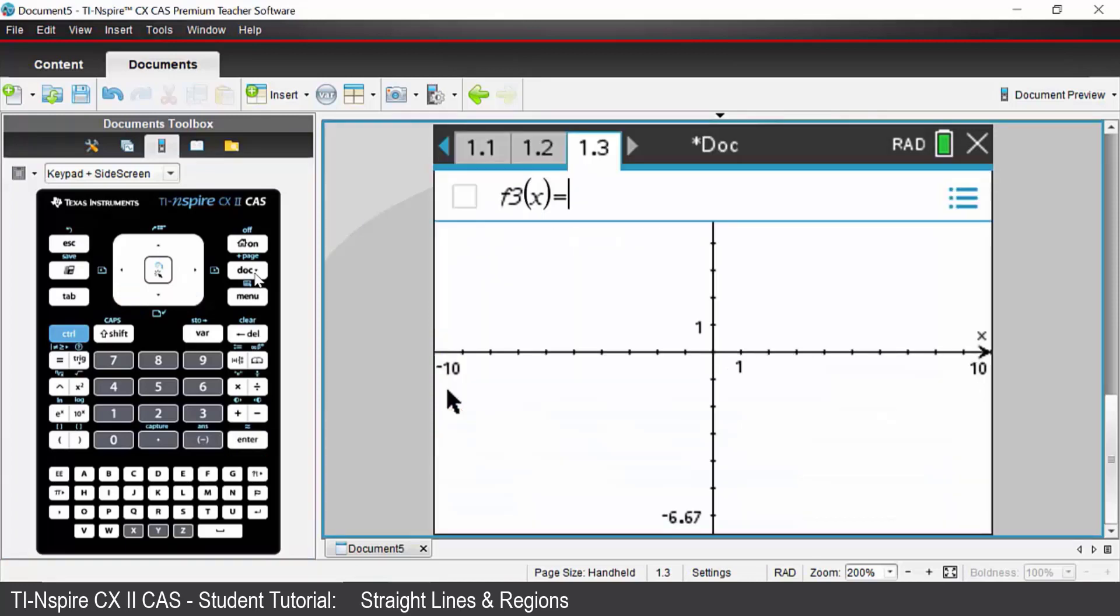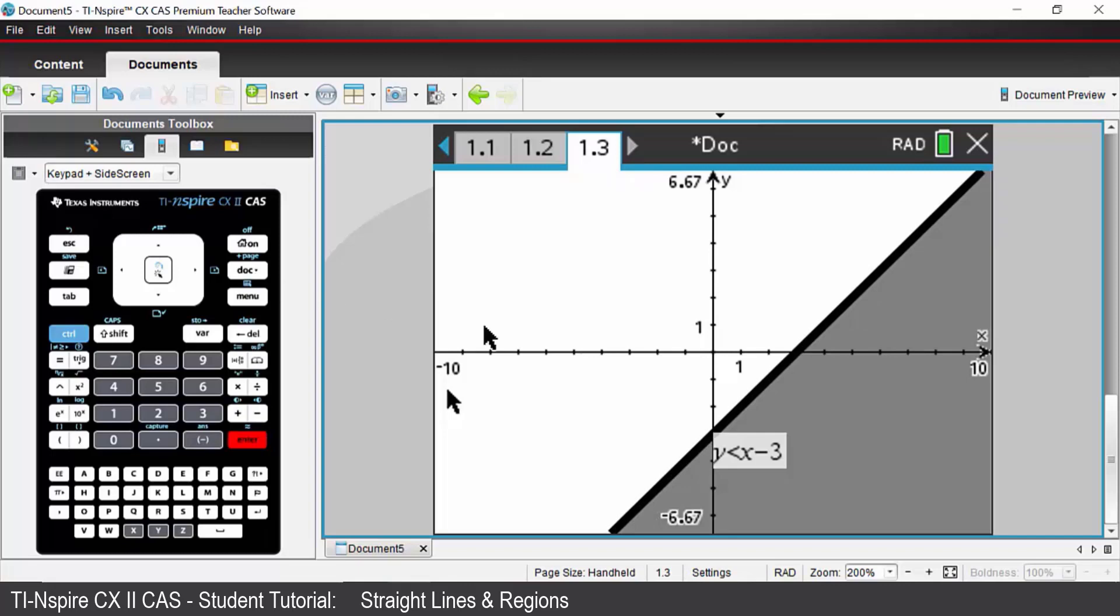Now to graph a region, press your backspace key. You can choose options 1 through 5 or you can choose relation. So we're going to just choose option 2 y less than, and we're going to graph the region y less than x minus 3. Press enter and that region has been sketched for you.